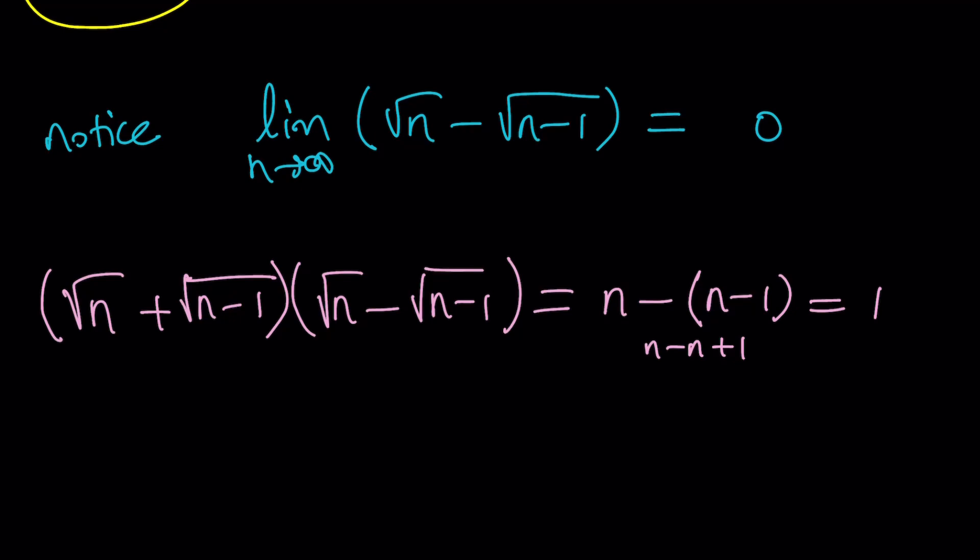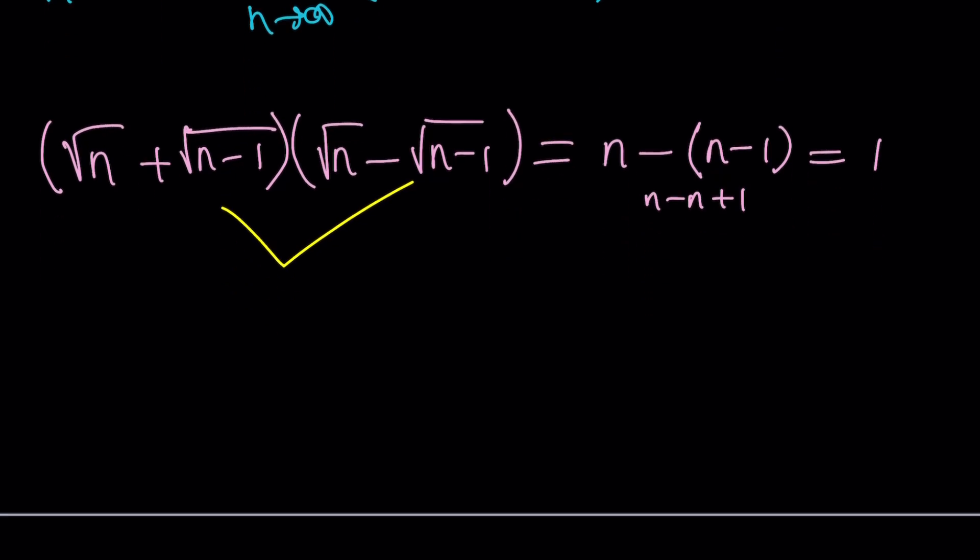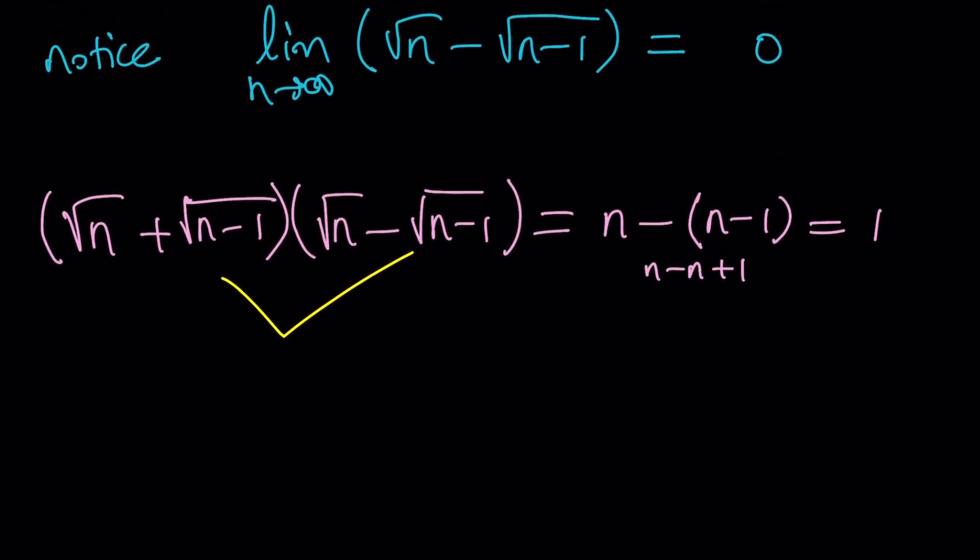Now, these two are conjugates, but also reciprocals. So we can go ahead and do the following. Since our expression contained the difference of two radicals, we can write this as the square root of n minus the square root of n minus 1 as 1 over the square root of n plus the square root of n minus 1.